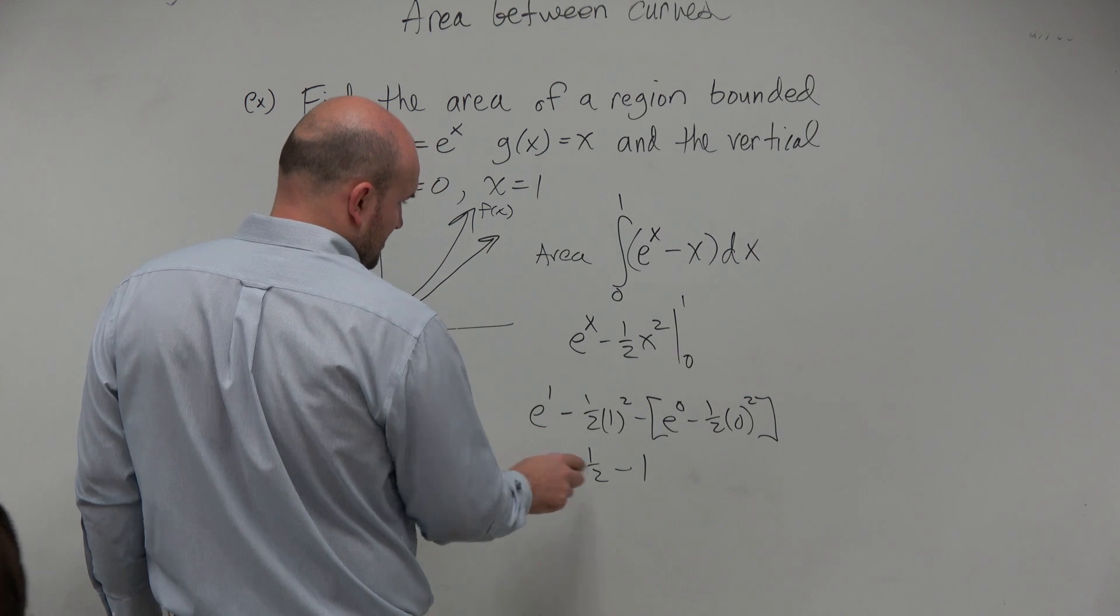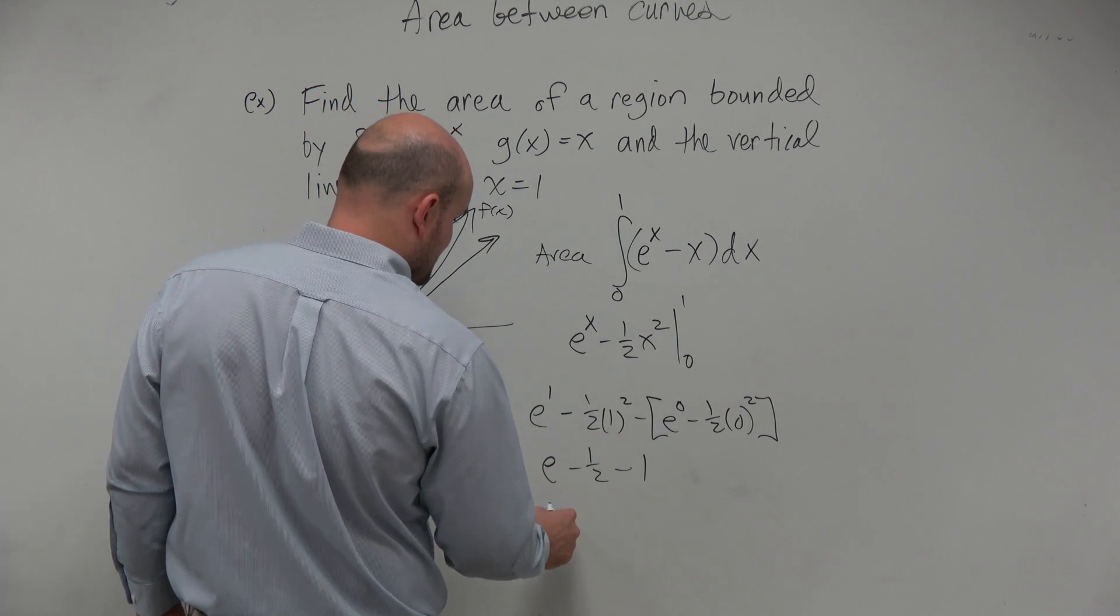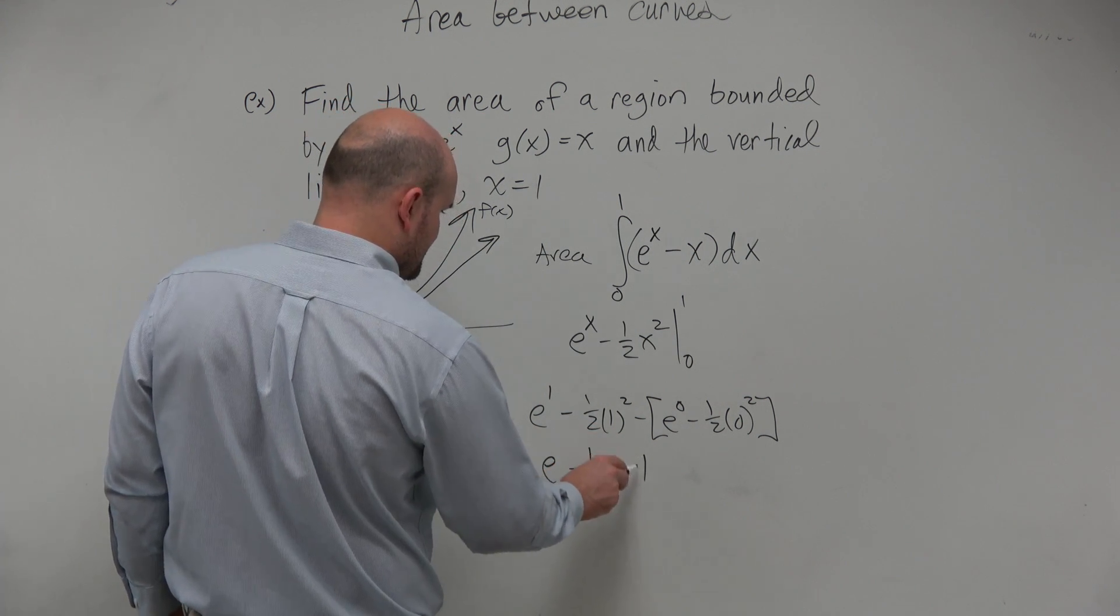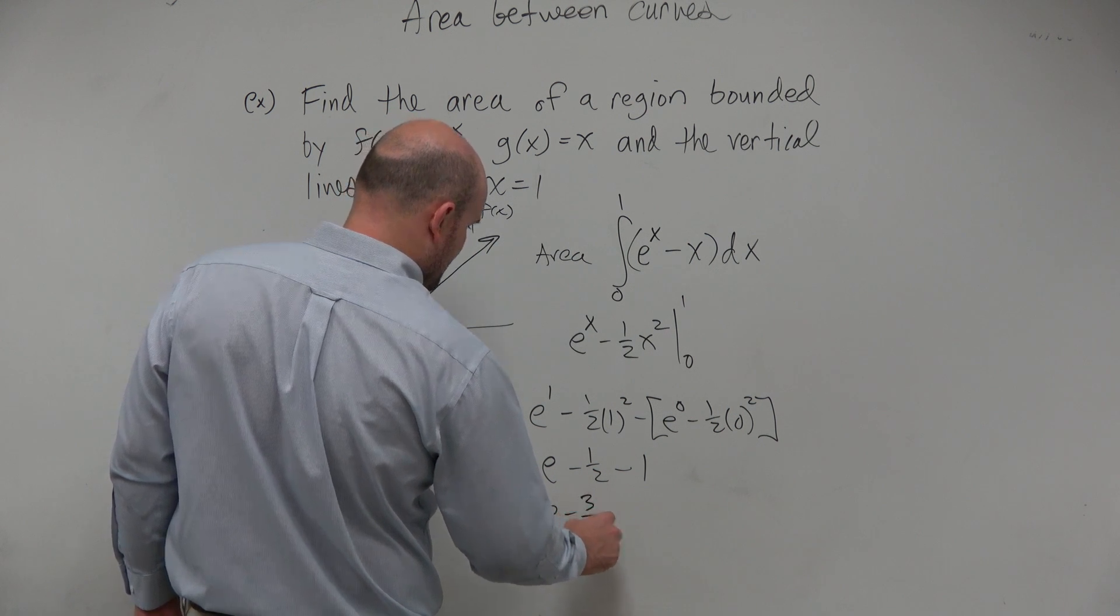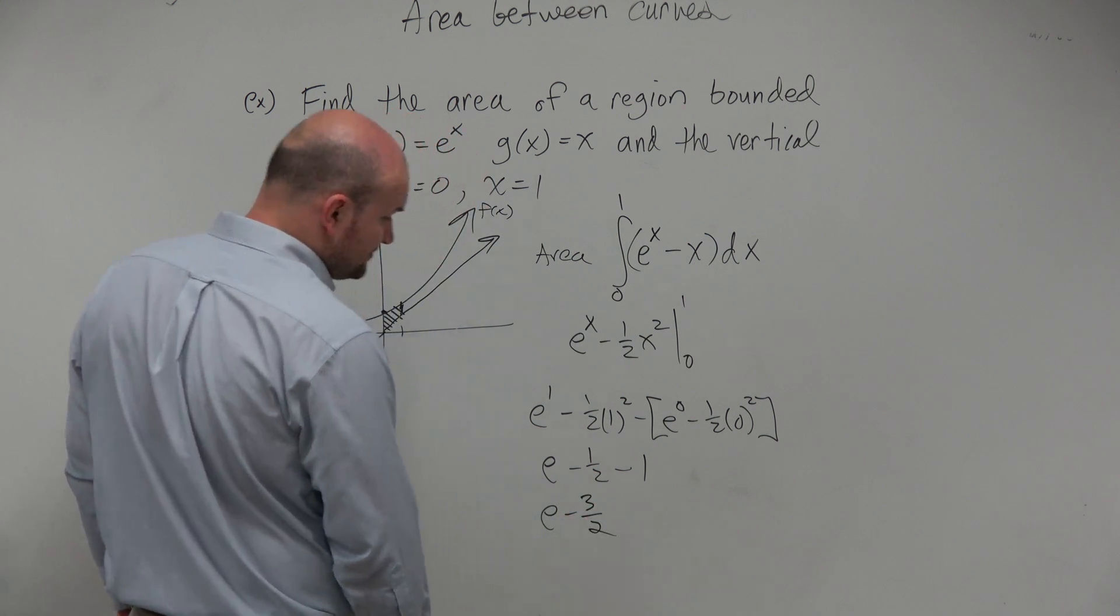And then we could bring this up. We could simplify that a little bit. e minus 2 over 2. So that's e minus 3/2, right?